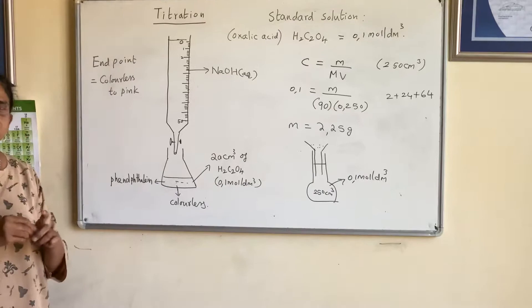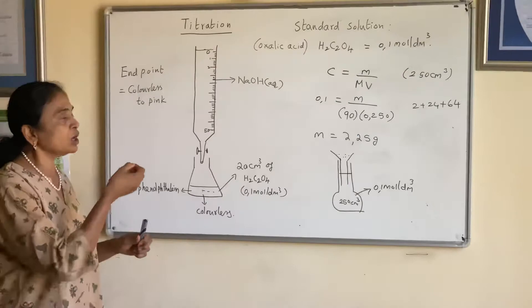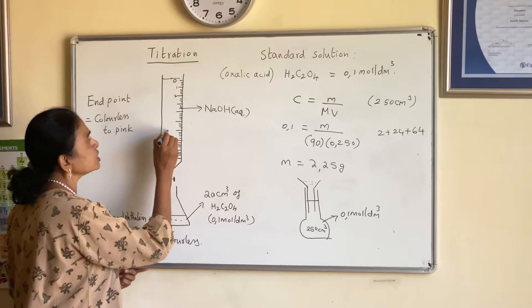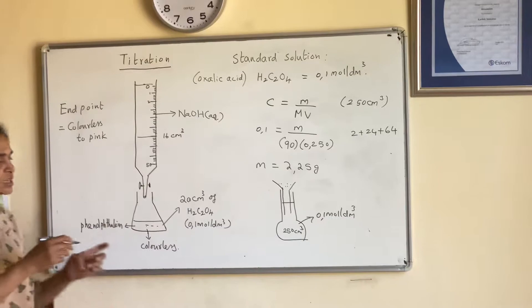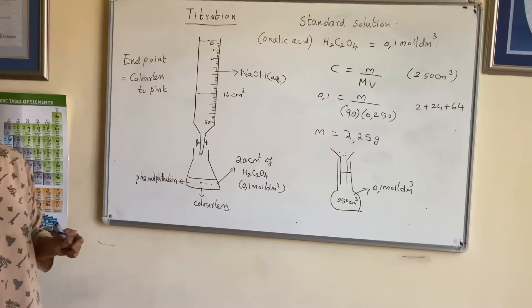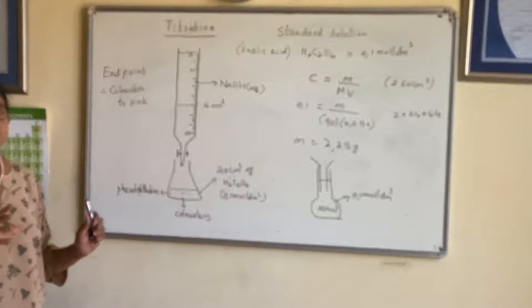Suppose at 14 ml the pink color appears but takes time to disappear — that means you are nearing the endpoint. Now start adding drop by drop. For example, when you add 16 cm³ of sodium hydroxide the color changes from colorless to pink — that means you have reached the endpoint.